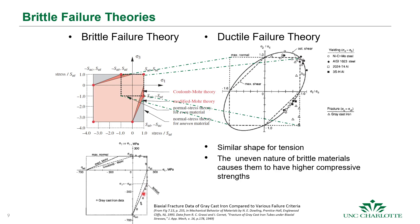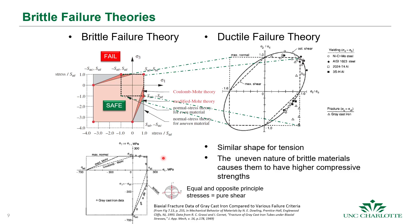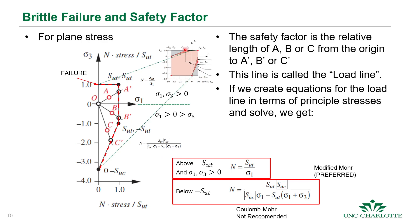For ductile materials we use the von Mises effective stress; for brittle materials we use the modified Mohr theory, which more closely and conservatively estimates the failure boundaries. To use it, look up tensile and compressive strength, determine where your load state falls on the envelope, and calculate the distance to the nearest failure line — that's your safety factor. When outside those envelopes, the material fails.